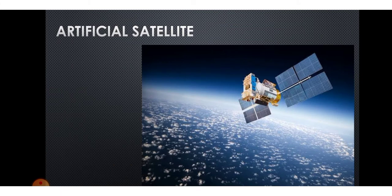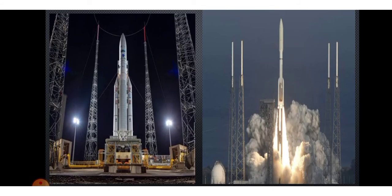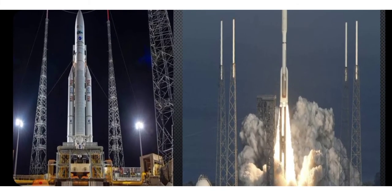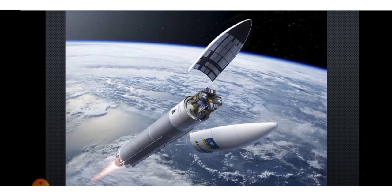The next part is about artificial satellites. The moon was once the only satellite orbiting the earth, but now there are many artificial satellites orbiting the earth. An artificial satellite is a human-made object which orbits the earth or some other celestial body in space. When an artificial satellite is launched, a rocket takes it up into space, and then the satellite is put into orbit.